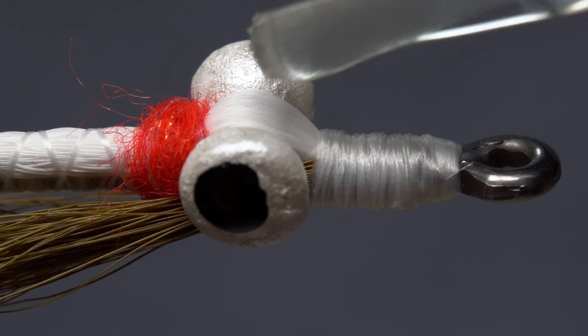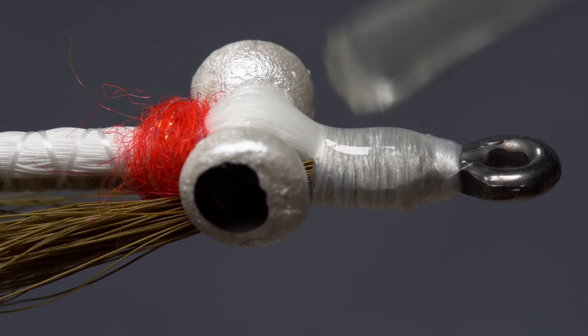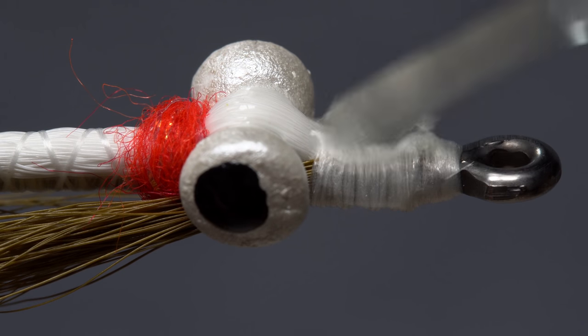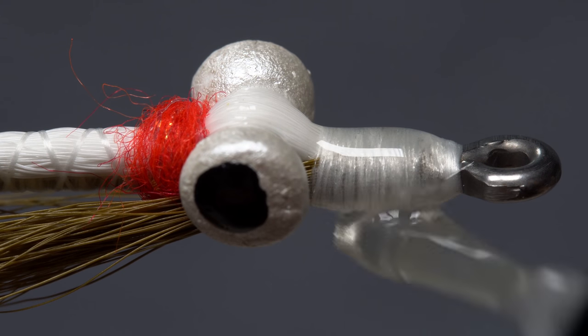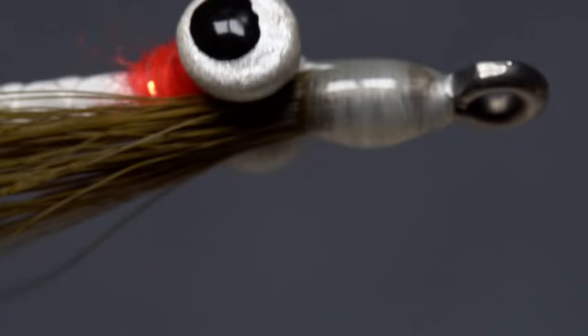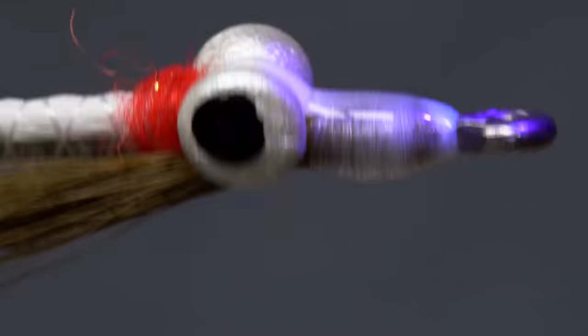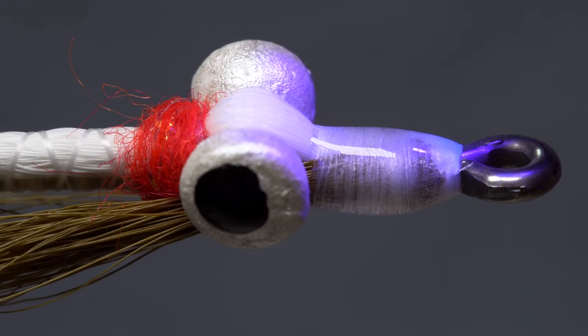Applying a thin coat of UV cure resin to the bucktail over top of the dumbbell eyes and to the thread wraps at the head of the fly ensures the wraps won't come unraveled, the bucktail won't pull out, and the fly might just last for more than one or two bluefish.